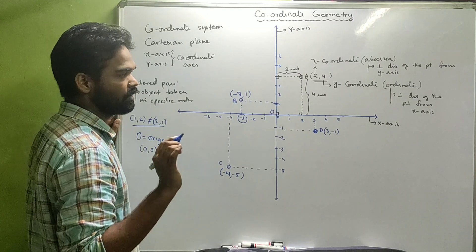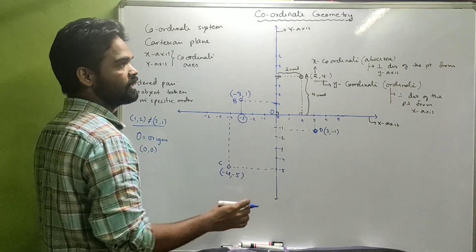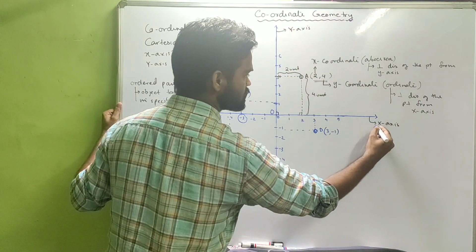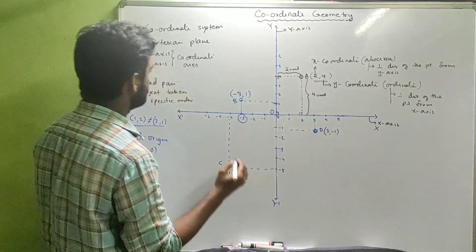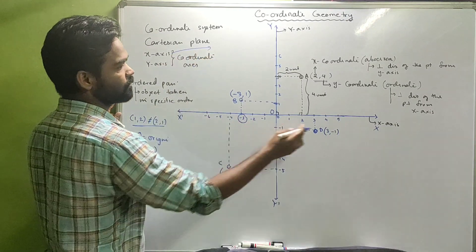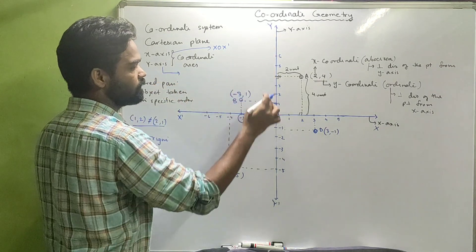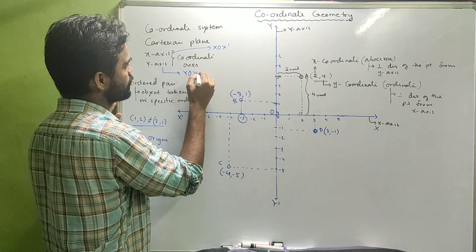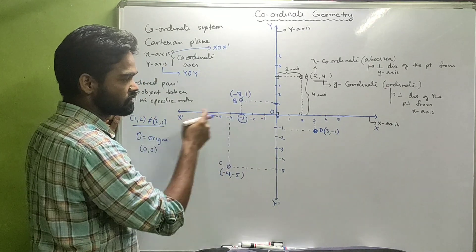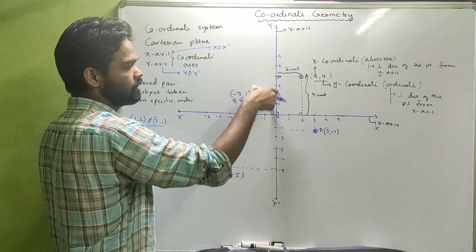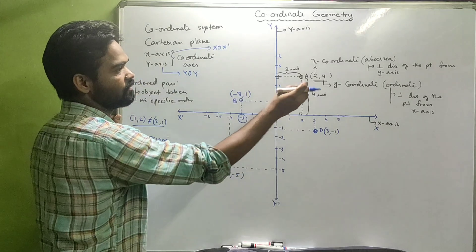This entire coordinate plane has been divided into four parts. The x-axis is the line XOX', and the y-axis is YOY'. OX represents the positive side of the x-axis, OX' represents the negative side. Similarly, above the origin is the positive side of the y-axis and below is the negative side.